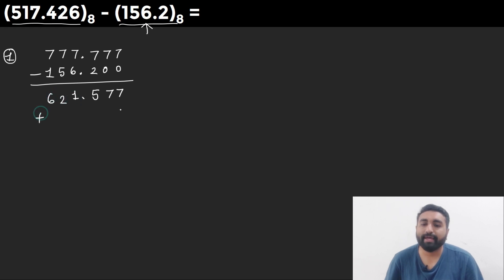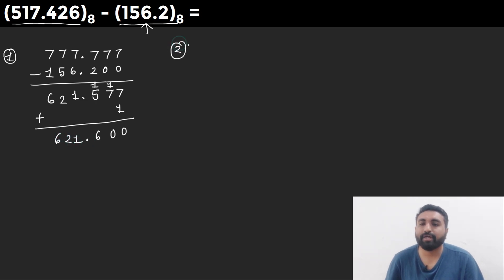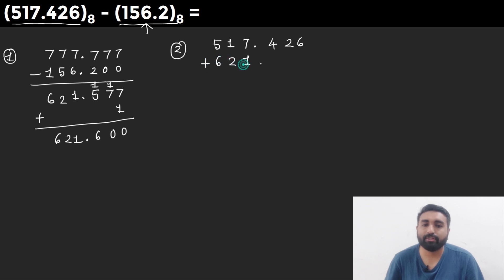So the 7's complement is 621.577. Adding 1: the last digit 7 plus 1 = 8, so 0 with carry 1; 7 plus 1 = 8, so 0 with carry 1; 5 plus 1 = 6; the rest remain as is, giving the 8's complement as 621.600. Now in the second step, we add 517.426 and the 8's complement 621.600.